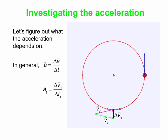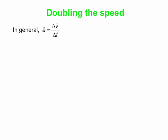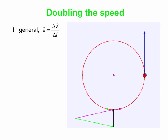So let's figure out what this acceleration depends on — we'll investigate the speed dependence. In general, acceleration is determined by change in velocity over the time interval. Now we double the speed and do the same vector construction. We've got the same size circle and the same points, but the object is going twice as fast, so the velocity vectors are twice as big. This triangle is scaled up by a factor of two from the previous one. The initial velocity is the green vector, the final velocity is the purple vector, and the change in velocity is delta V2 — all vectors are twice as big because we doubled the speed.